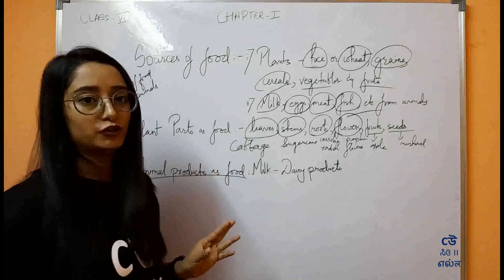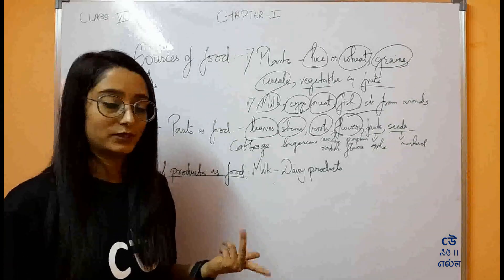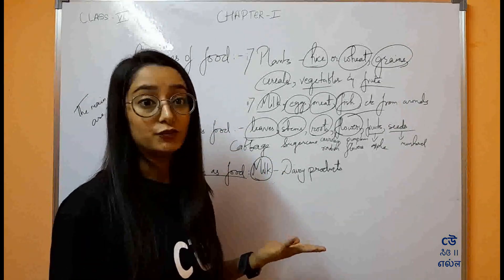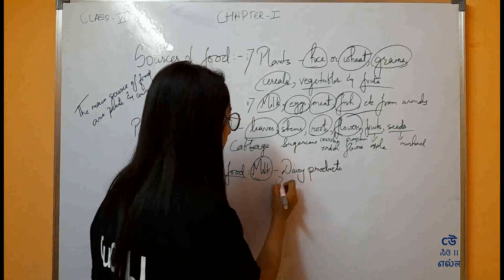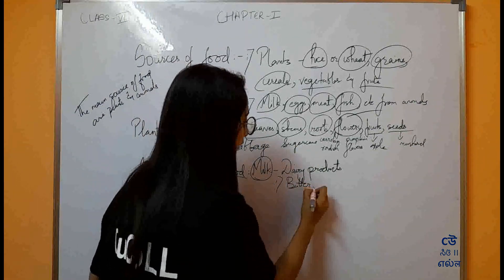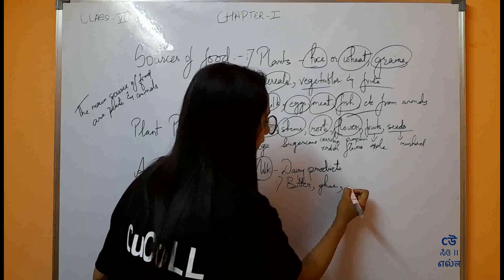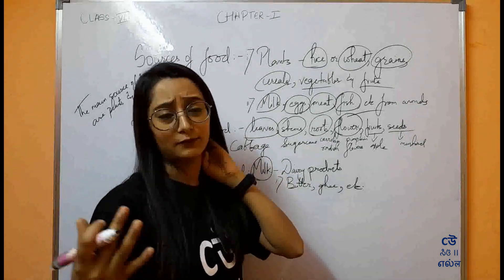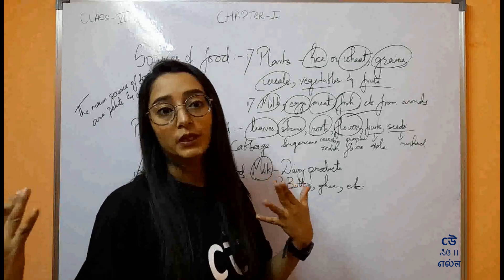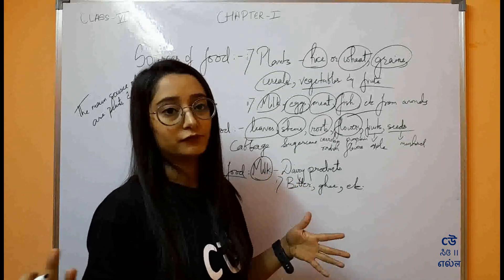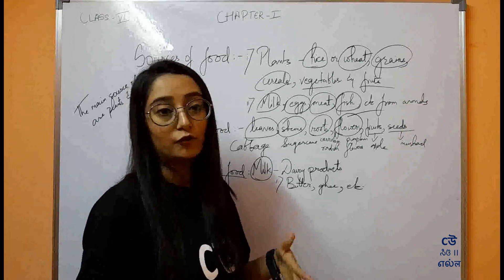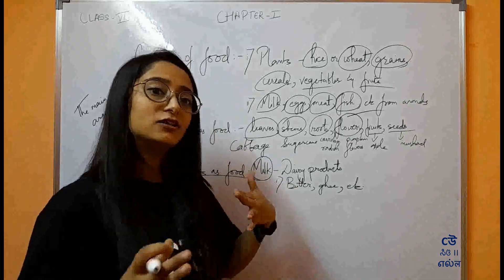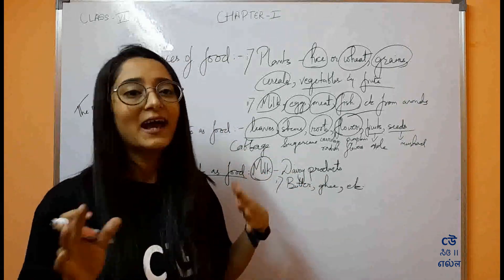Animal products as well — what are the animal products that we get? Primarily, it's milk, from which we get dairy products which we use in our daily life, like butter, ghee, milk cream, and everything. Even sweets that you eat from a shop, or ice cream, the ultimate source is milk — the ultimate source is the animal.